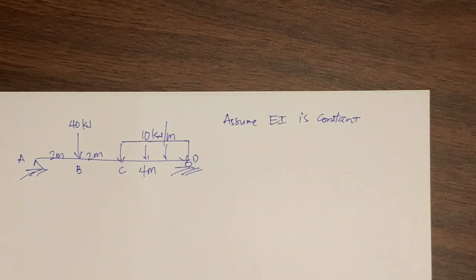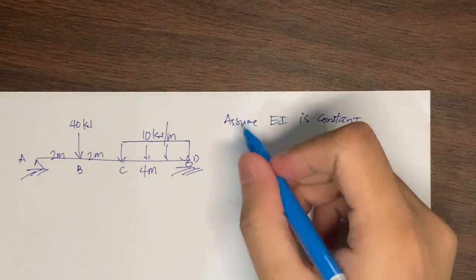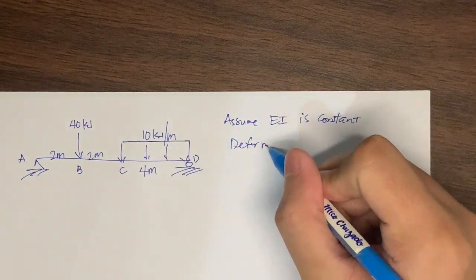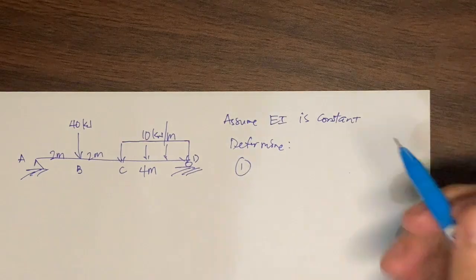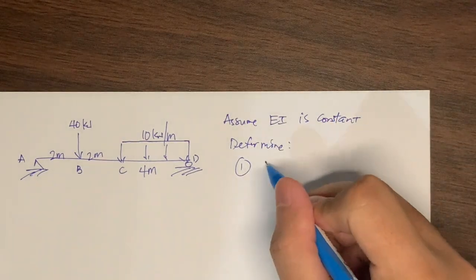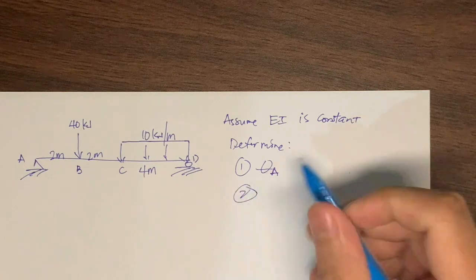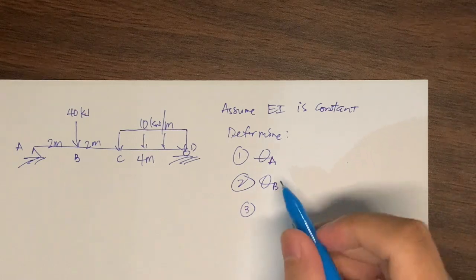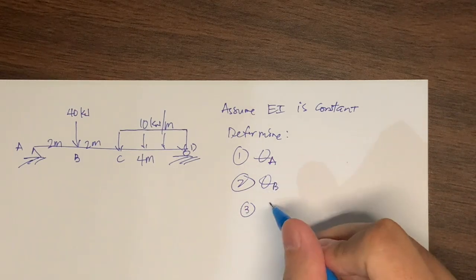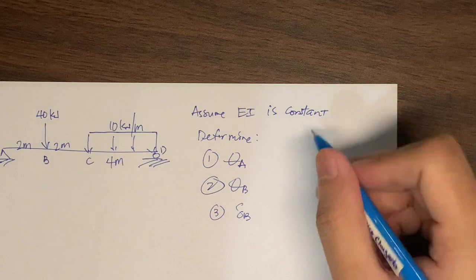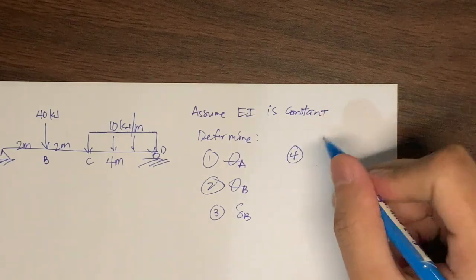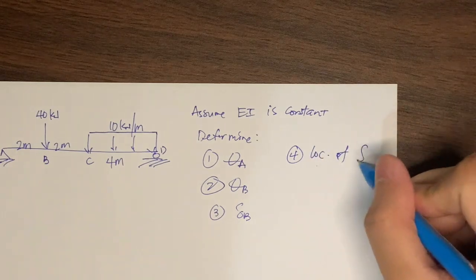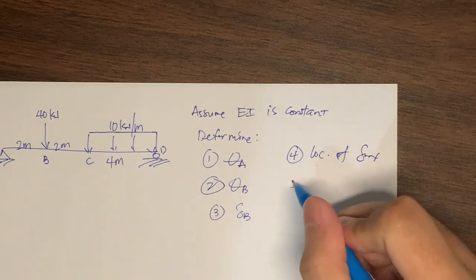The questions we need to solve are: number one, the slope at A; number two, the slope at B; number three, the deflection at point B; number four, the location of maximum deflection; and number five, the magnitude of the maximum deflection.